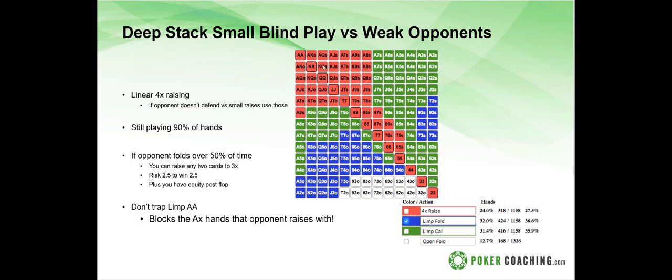The biggest mistakes I see from players: number one, they don't raise enough from the small blind against weak opponents. They limp too many hands and don't raise enough. And they try to trap against weak opponents too often, but those opponents aren't raising enough to make the trap worthwhile.